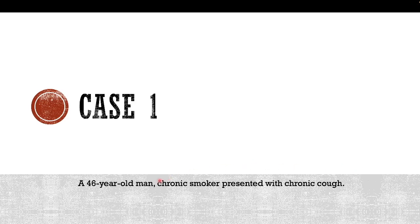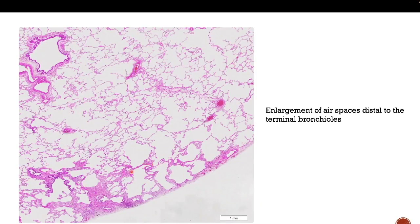Our first case is a 46-year-old man who is a chronic smoker and presented with chronic cough. When we take a biopsy of this patient, you will notice enlargement of the alveolar spaces. The alveolar spaces are enlarged, and this enlargement is distal to the terminal bronchiole — so distally you have these large air spaces.